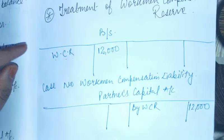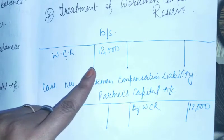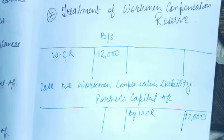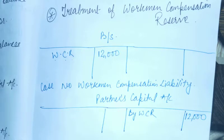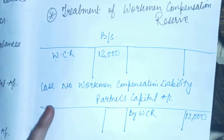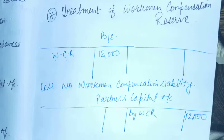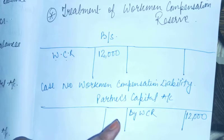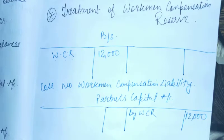In such cases, the entire amount of the reserve is distributed among partners. We write 'By Workmen Compensation Reserve' and distribute it among partners. We create this reserve so that if a worker gets injured during work — any accident, any physical damage — we can pay them compensation. Since no claim was made, the unused reserve amount is distributed among partners as profit. This is case number one.